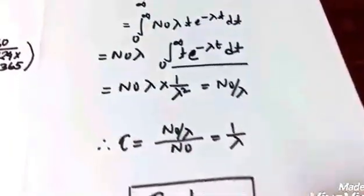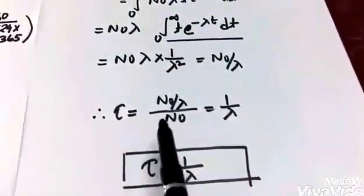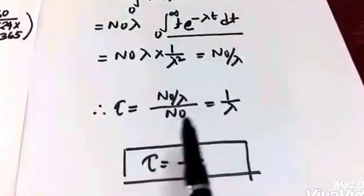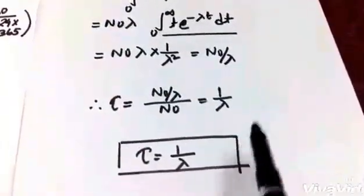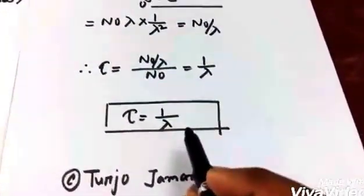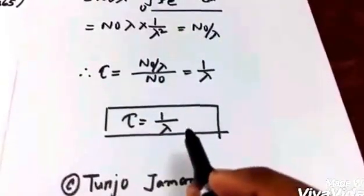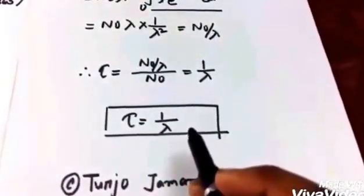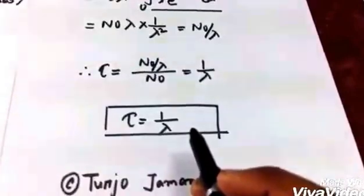Therefore our mean lifetime from the definition is N₀ divided by N₀ equals 1 by λ. So that is our formula that's found in every HEC textbook, but the detailed explanation is absent.